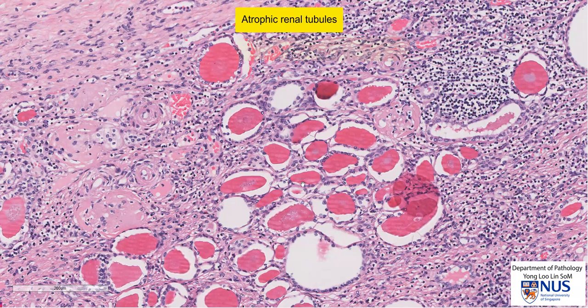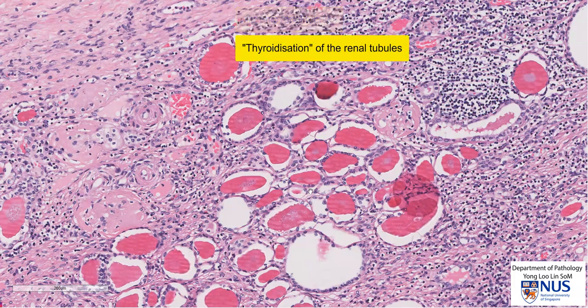This appearance is known as thyroidization of the renal tubules, and it is named this because the tubules actually do closely resemble thyroid follicles. Thyroidization is a feature of end-stage kidney, as it reflects atrophy of the renal tubules.